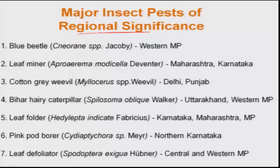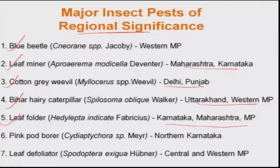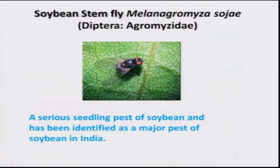Similarly, the pests of regional importance, which are sporadic, include blue beetle particularly in western MP, leaf miner in Maharashtra and Karnataka, grey weevil in Delhi and Punjab, Bihar eri caterpillar in Uttarakhand and western MP, leaf folder in Karnataka, Maharashtra and MP, pink pod borer in North Karnataka, and leaf defoliator in central and western MP.